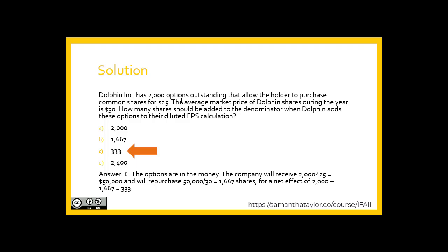These options are in the money because the holder can purchase shares for $25, yet the average market price is $30. The company would receive 2,000 × $25 = $50,000 upon issuance. They would then repurchase $50,000 ÷ $30 = 1,667 shares. The net effect — the free shares — is 2,000 minus 1,667, for a total of 333 shares added to the denominator.